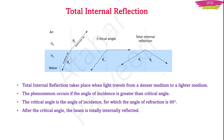Total Internal Reflection takes place when light travels from a denser medium to a rarer medium, and the angle of incidence is greater than the critical angle. The critical angle is defined as the angle of incidence for which the angle of refraction is 90 degrees. After the critical angle, the beam is totally internally reflected.